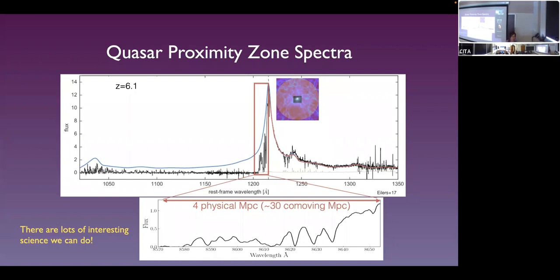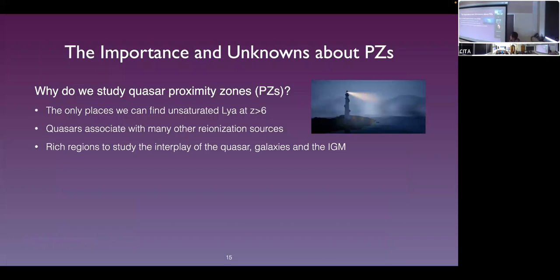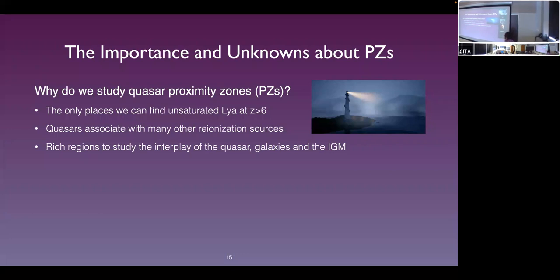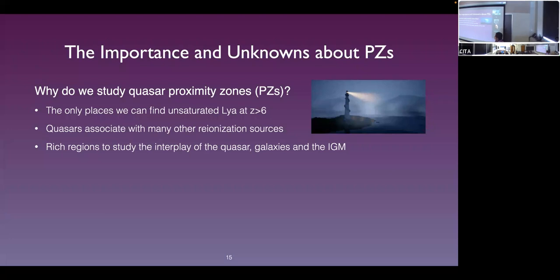This brings us to why studying quasar proximity zones is so important. First, this is the only place we can find unsaturated Lyman-alpha, allowing us to do science like probing the large-scale structure at reionization. Second, quasars are thought to live in overdense regions, and we know massive halos tend to cluster together. Quasars are really like lighthouses in the distant universe — not only can we study the intervening IGM by analyzing their spectra, but we can use their positions to find other high-redshift galaxies and better plan to target overdense regions to find the first galaxies.